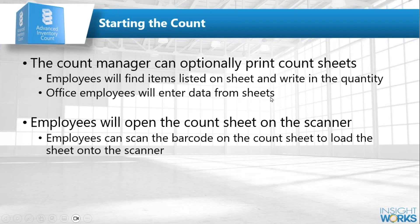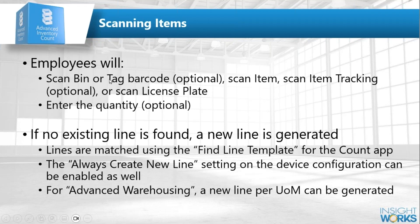Put barcodes on your bins or items and your count will go much faster with much better accuracy. The paper-based approach with the inventory count module works great — way better than anything built into Business Central. Focusing on the scanner workflow: people open the count sheet they're assigned, scan the bin or tag — which records the shelf number or bin code — then scan the item, optionally scan the lot or serial number if not in the barcode, optionally scan a license plate, and enter the quantity.